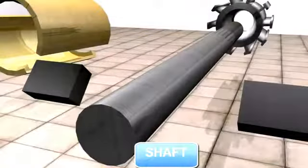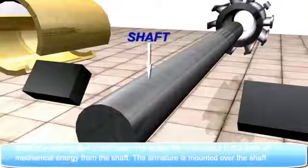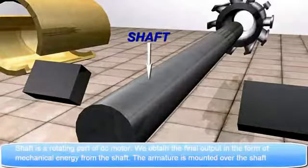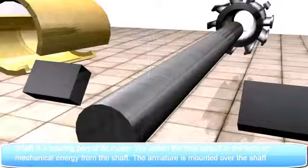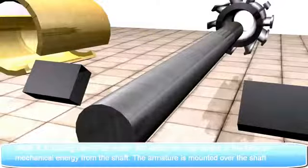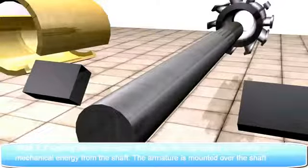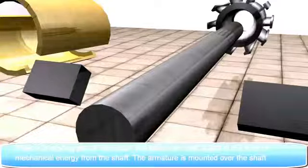Shaft. Shaft is a rotating part of DC motor. We obtain the final output in the form of mechanical energy from the shaft. The armature is mounted over the shaft.